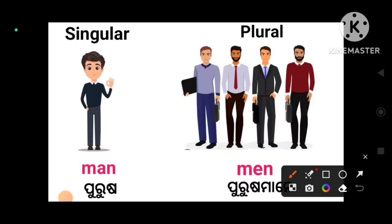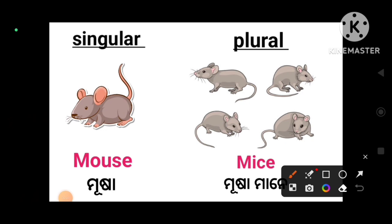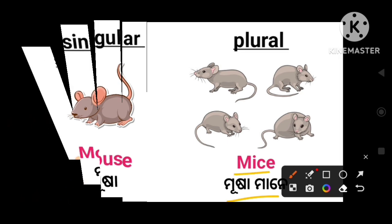Next: man becomes men. Mouse — the plural form is mice. M-I-C-E. Woman becomes women. Child becomes children. These are different plural forms — mouse's plural form is mice.